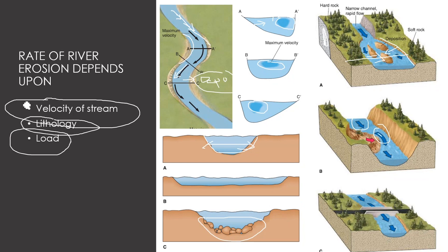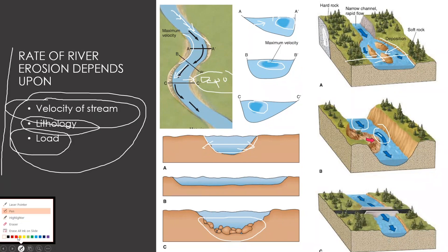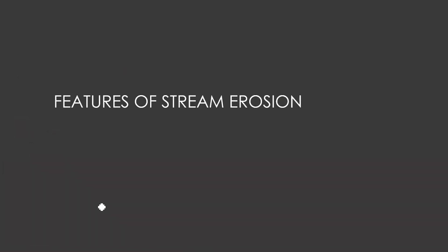These are the main processes that control the rate of erosion in a river. All these processes together produce a number of different geological features in a river system. That will be the topic of our next lecture — features of stream erosion. Thank you.